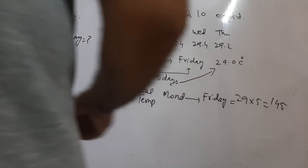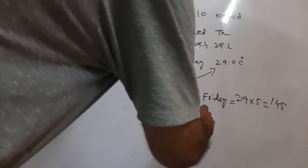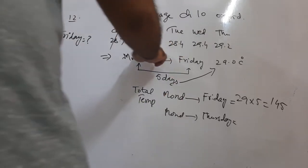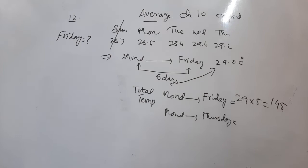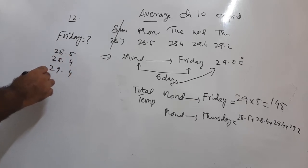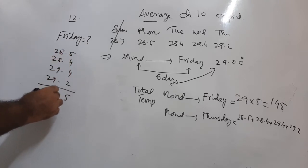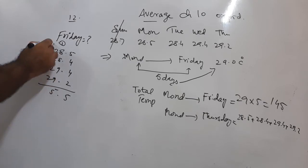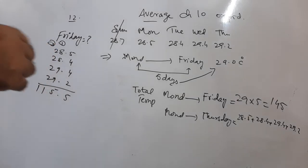From Monday to Thursday we have four days. We can find the total temperature by adding those four values: 28.5 plus 28.4 plus 29.4 plus 29.2, which gives 115.5.